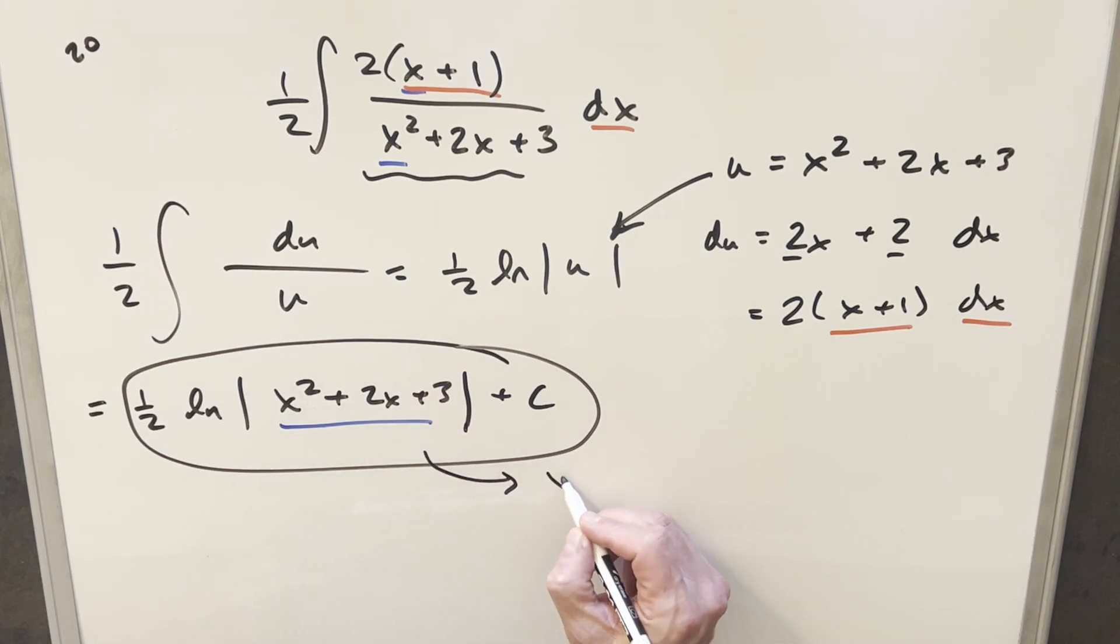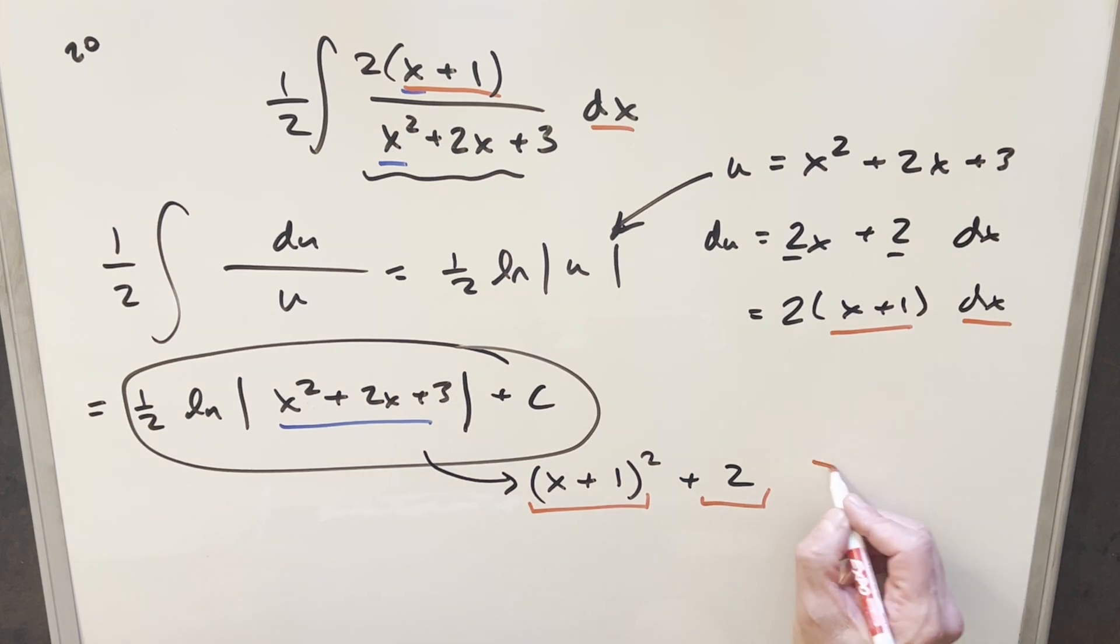So because we have a 2 here, I can write this as x plus 1 squared. You multiply that out, you get x squared plus 2x plus 1. So I need to add a 2 on it so that I'm not changing it. So this is the same expression as this. But then doing it that way, because this term is squared, this here has to always be positive. Of course, plus 2 is always positive. So what we find is this expression is always greater than 0.